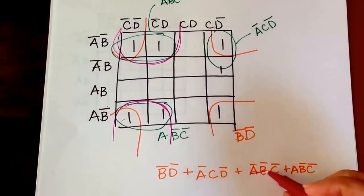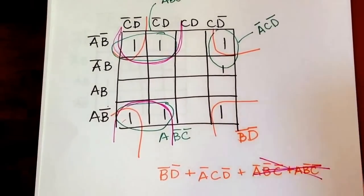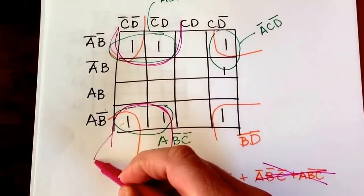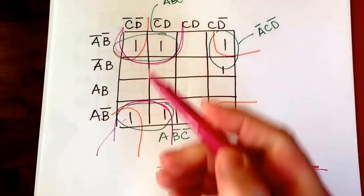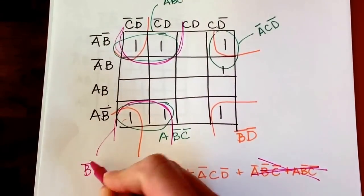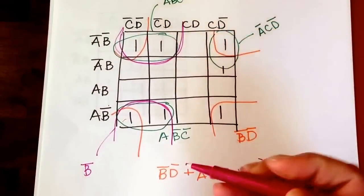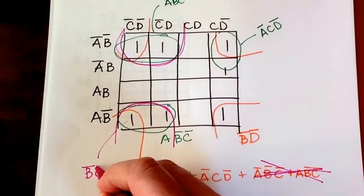Okay, and we wouldn't have those two terms then. Instead, we would have, what would the term be here? From here to here, A changes, so we get not B. And from here to here, D changes, so it would be not C.